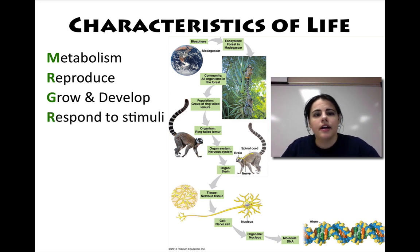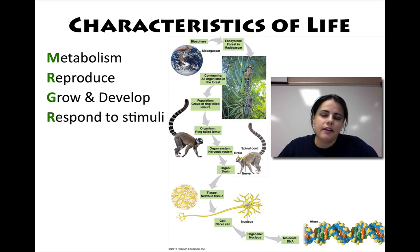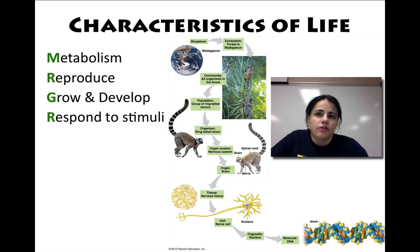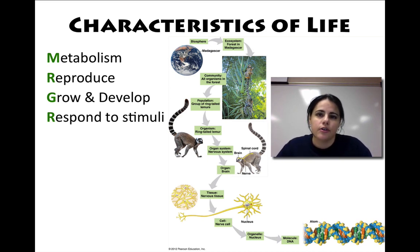Responding to stimuli is the next one in Mr. Gromack. Anything that you respond to is called a stimulus. That could be an external thing like temperature or light, or it could be an internal thing like not having enough glucose or having too much or too little glucose in your blood. You have to respond to those conditions in order to maintain a certain balance.